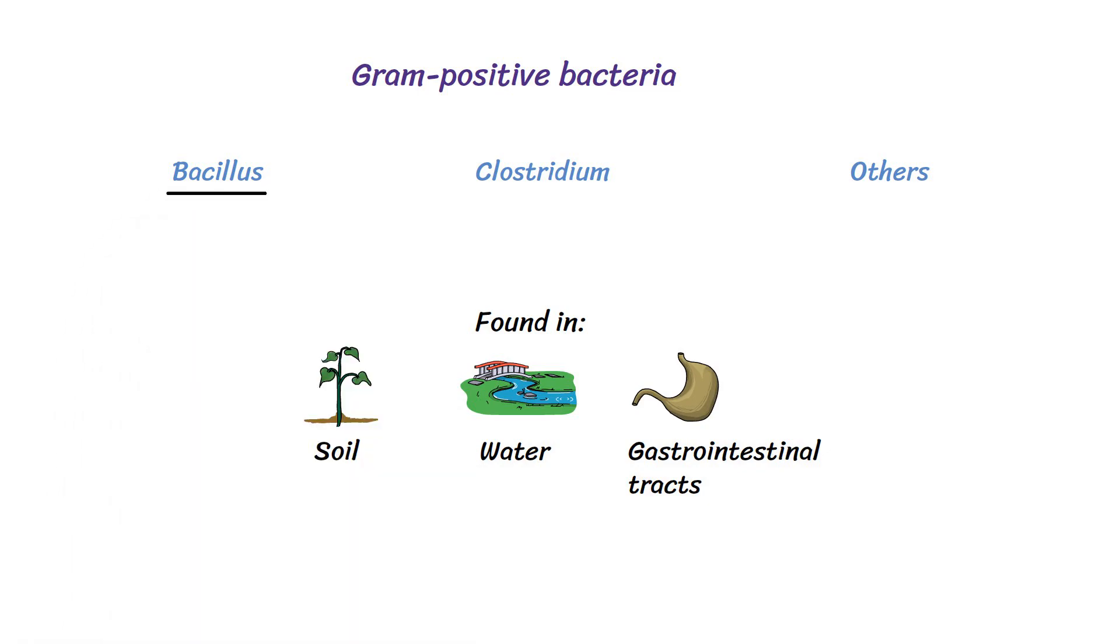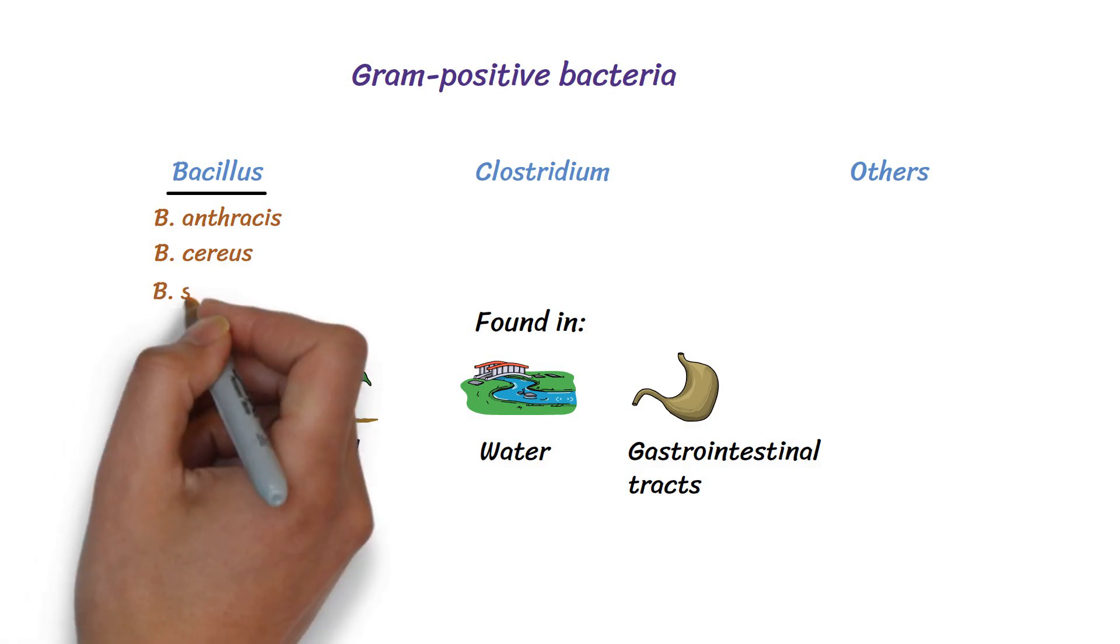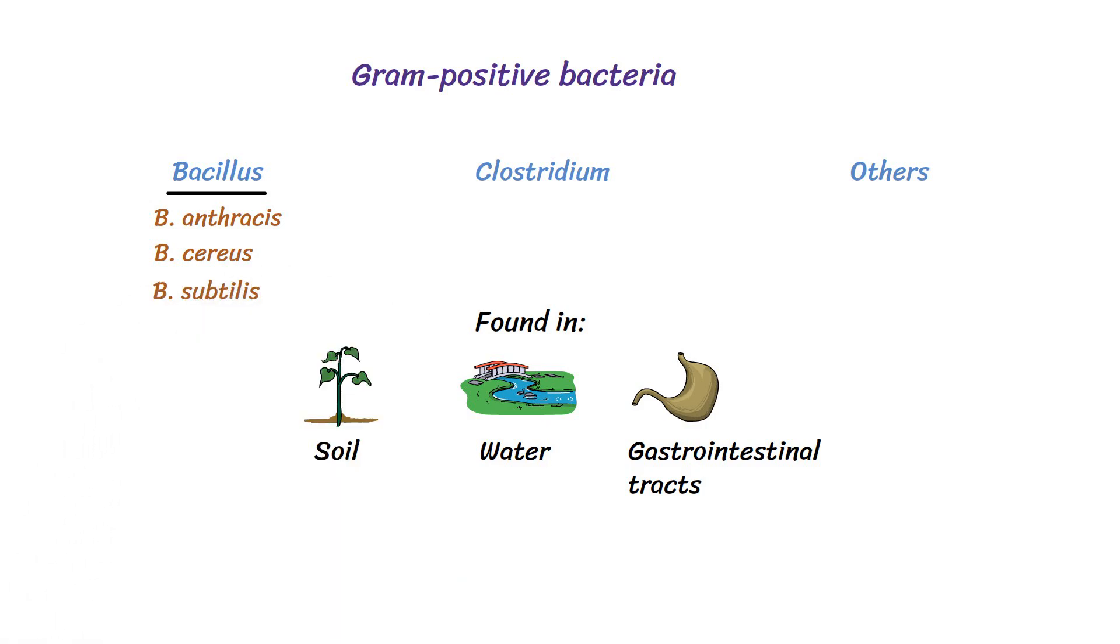Bacillus species, such as Bacillus anthracis, Bacillus cereus, and Bacillus subtilis are well known for their ability to form endospores.